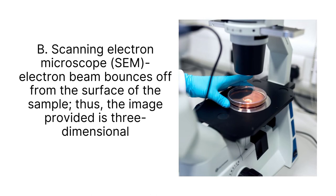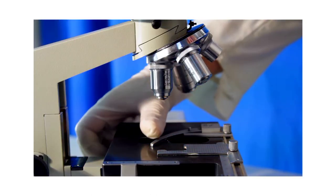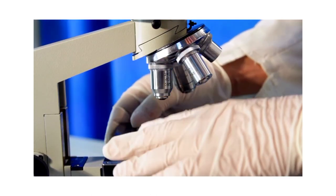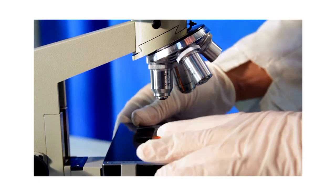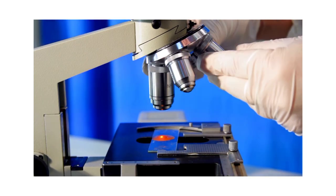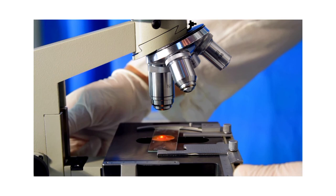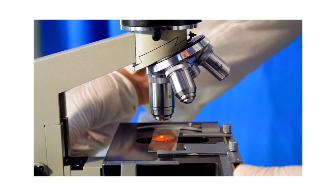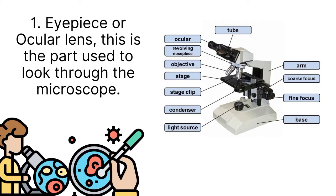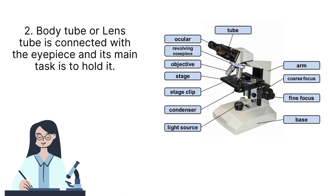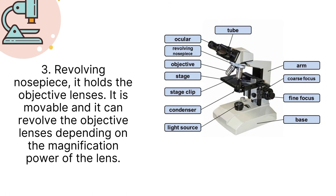Now, let's discuss the parts and the functions of the different parts of a simple or compound microscope. First is eyepiece or ocular lens. This is the part used to look through the microscope. The tube or lens tube is connected with the eyepiece and its main task is to hold it. Revolving nosepiece holds the objective lenses. It is movable and it can revolve the objective lenses depending on the magnification power of the lens.